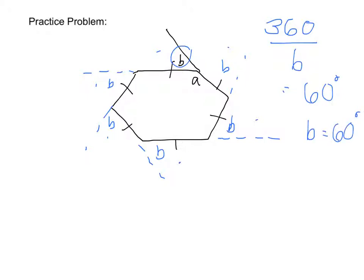And then to find a, we could either just say that if you look right here, they're supplementary, so a is going to be 120. Or if we didn't know what b was,